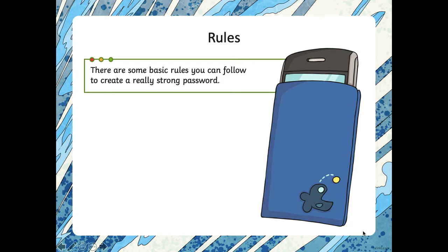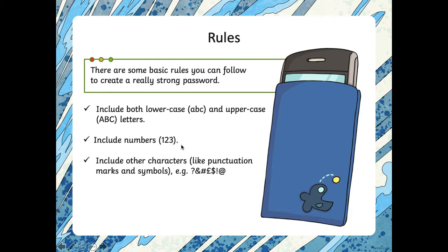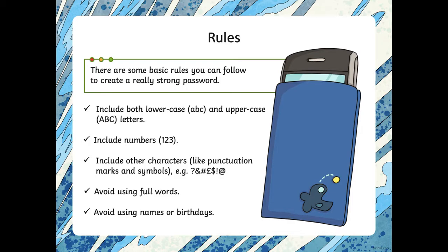Here are some basic rules that you can follow to create a really strong password. Number one: include both lowercase — a, b, c, d — and uppercase — A, B, C — letters, so capital letters and lowercase letters. Include numbers in your password, like one, two, three. Include other characters like punctuation marks and symbols. And avoid using full words. Or avoid using names or birthdays — for example, if you're Harry Sullivan, don't have a password called Harry Sullivan, because someone will guess it.